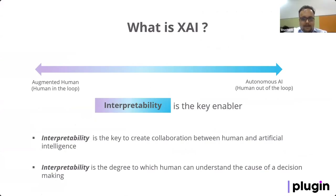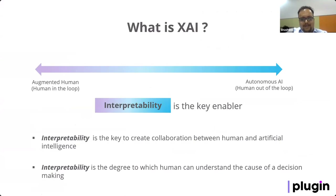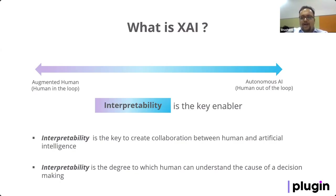So what is explainable AI? When humans make a decision, you can ask them how they made it. But for most AI algorithms — especially newer ones like deep learning — algorithms are mostly black boxes, and more often than not you cannot ask them how they came to a decision. The goal of explainable AI is to provide a verifiable explanation of how an AI system makes a particular decision.